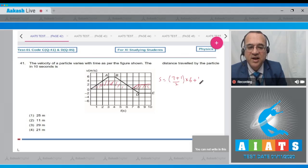Then, if I take the area of the triangle, 1 by 2 into 1 second and this height is 2, plus the last area of the rectangle. This area will be equal to 8 to 10 is 2 multiplied by 2. So this is 8 by 2, 4 into 6 plus 1 plus 4.